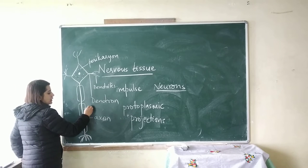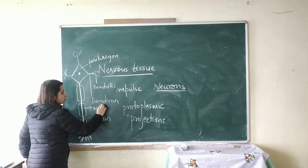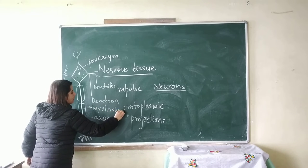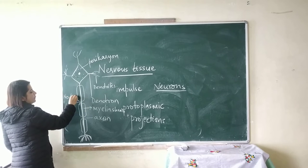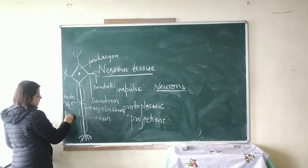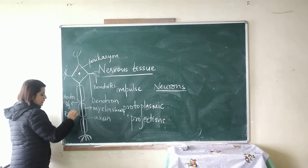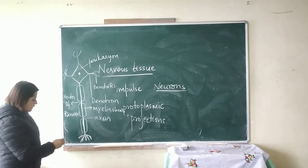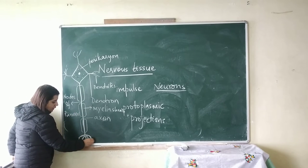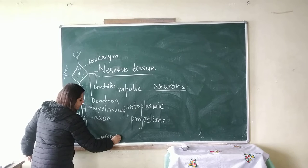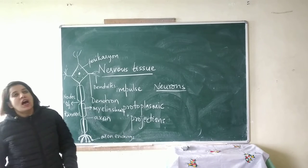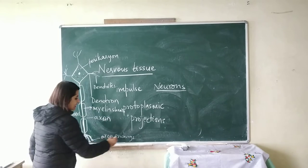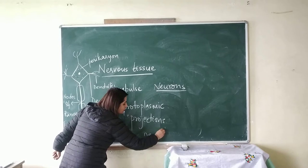The axon is covered by a sheath known as the myelin sheath, but it is not completely covered — there are some gaps in the middle. The gaps in between are known as the nodes of Ranvier. The axon ends in bulb-like structures known as axon endings.